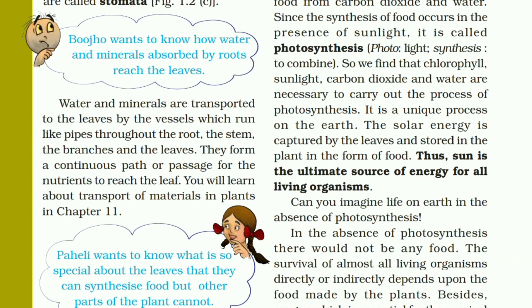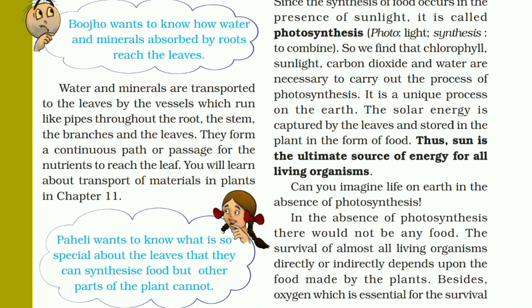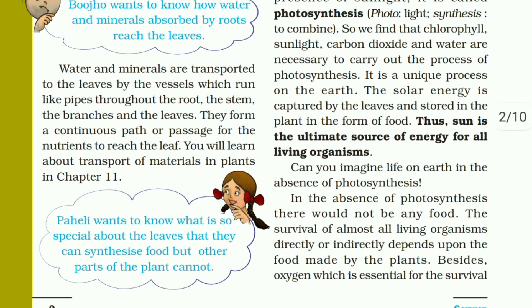Photosynthesis is a unique process on this earth — it is a process specific to plants. The solar energy is captured by the leaves and stored in the plant in the form of food. Sun energy is converted and stored in plants in the form of food. Sun is the ultimate source of energy for all living organisms.